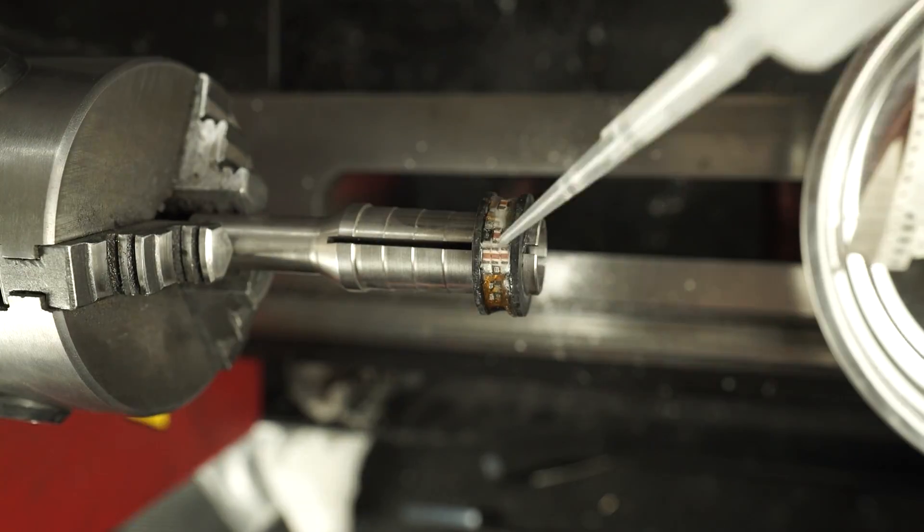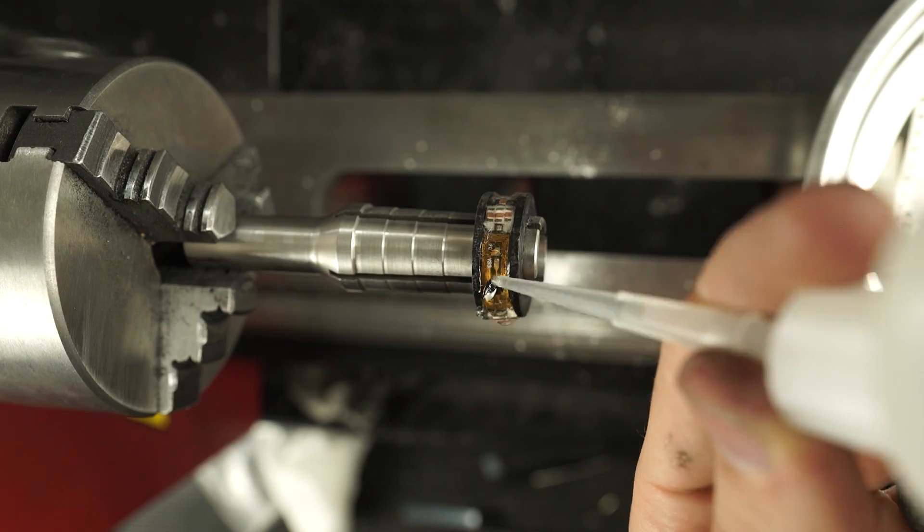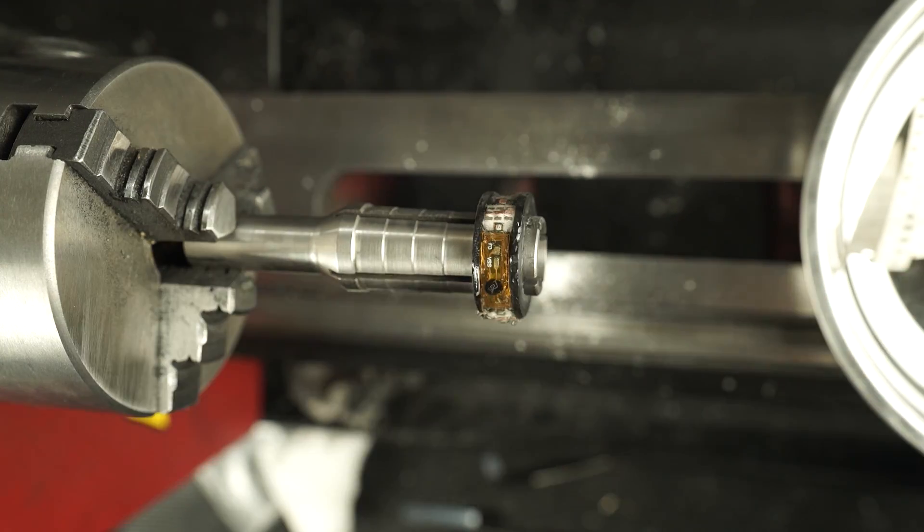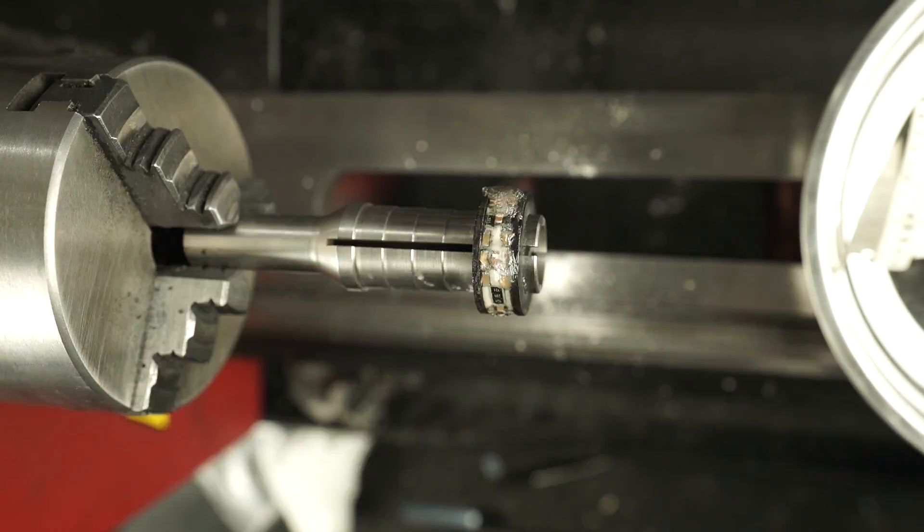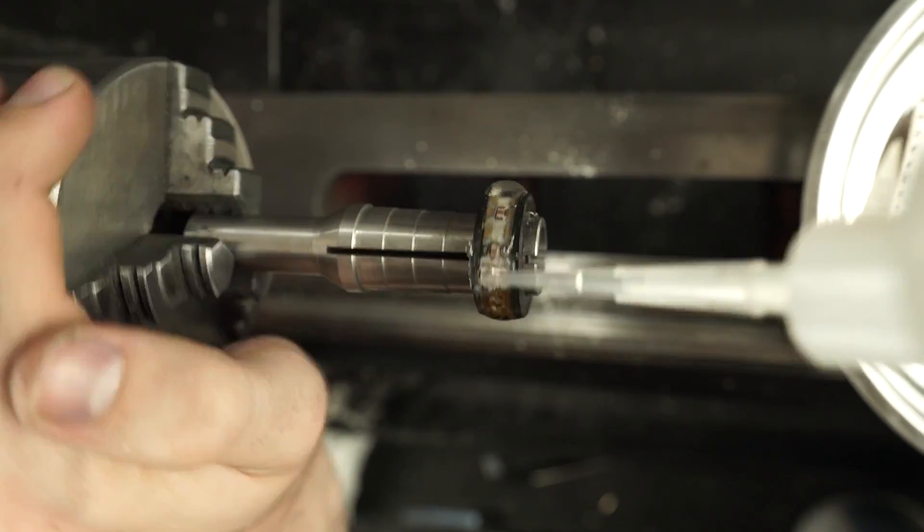Now I have everything in place except for the tritium vials, and you'll see how I add those in a second. But for now I'm just adding a bunch of CA adhesive over all of our components. That's going to set it all in place permanently and going to provide a clear and protective layer above everything.